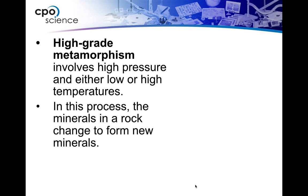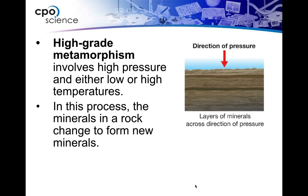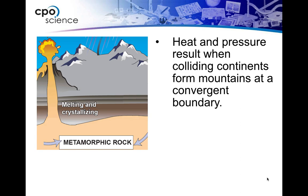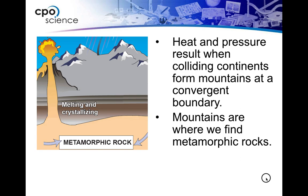The book talks a bit about the different types of metamorphism. High-grade metamorphism involves high pressure and either low or high temperatures. In this process, the minerals in a rock change to form entirely new minerals. Your book shows a table going through the different types of metamorphism — if you have high pressure and high temperature, you're going to have contact metamorphism or high-grade metamorphism. You can get different grades of metamorphism depending on temperature and pressure amounts. We can also get metamorphism when rocks collide — think about plate tectonics. When two tectonic plates crash into each other, that creates heat and pressure, and you can actually get metamorphic rock forming in that area. Mountains are great places where we often find metamorphic rocks because of that process.